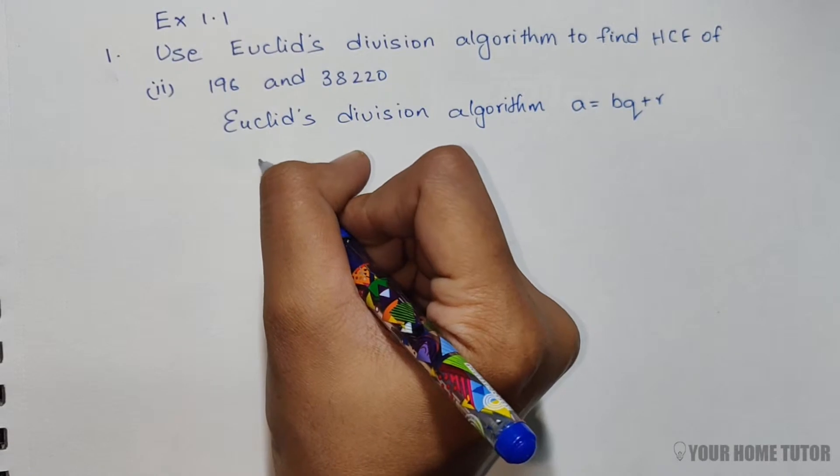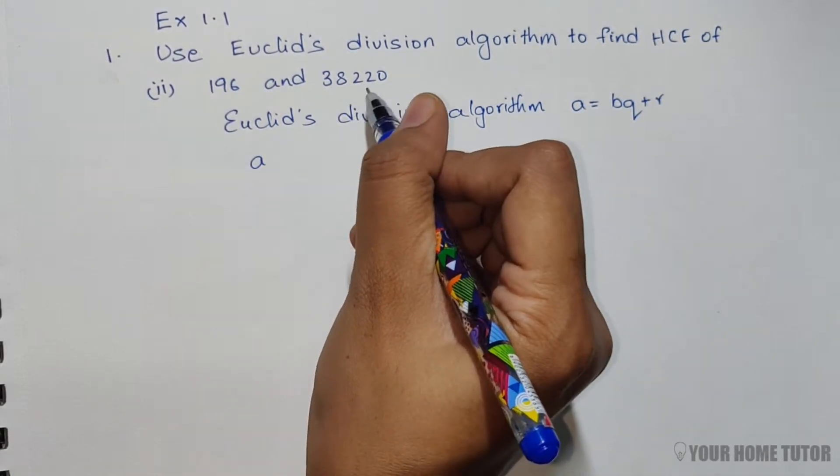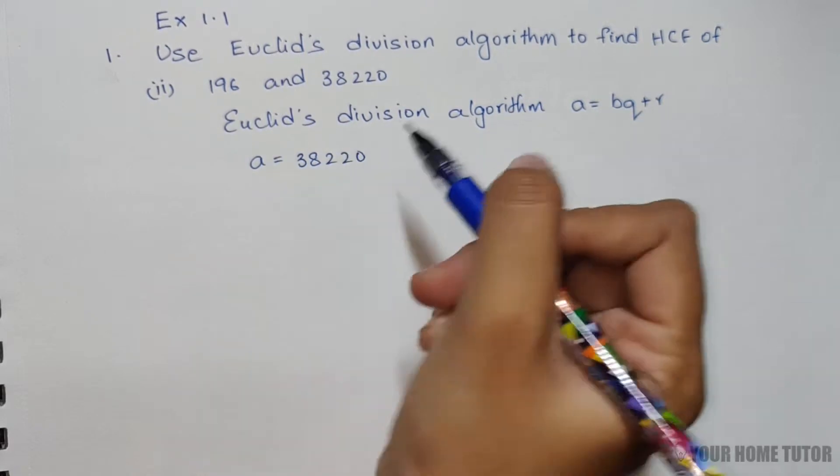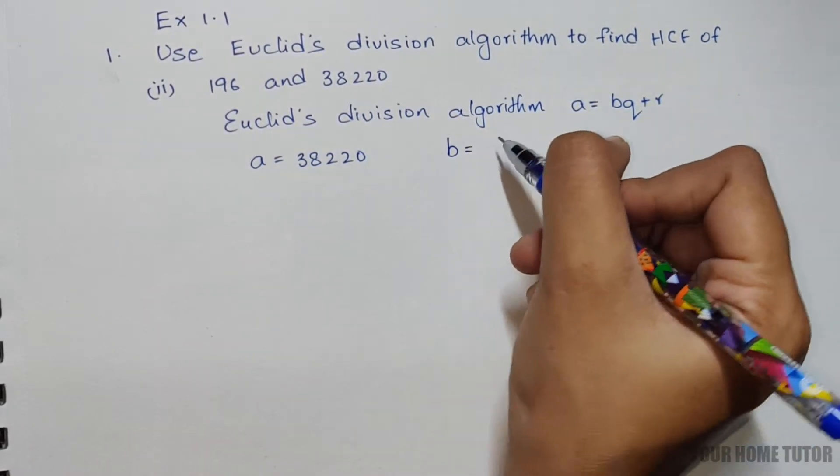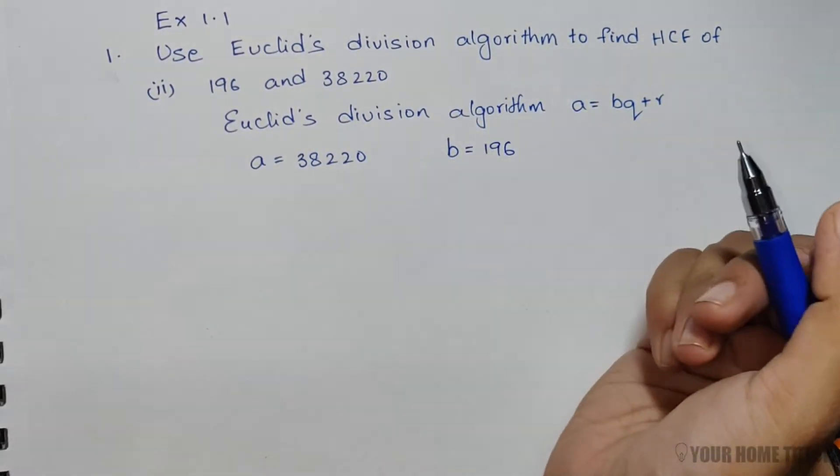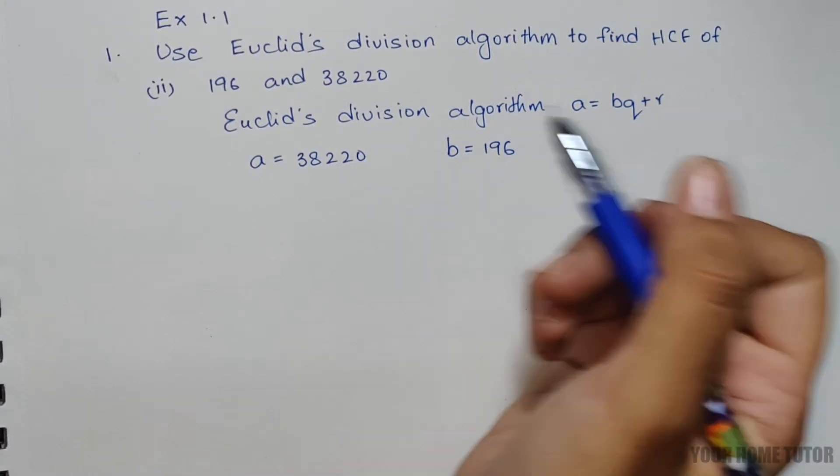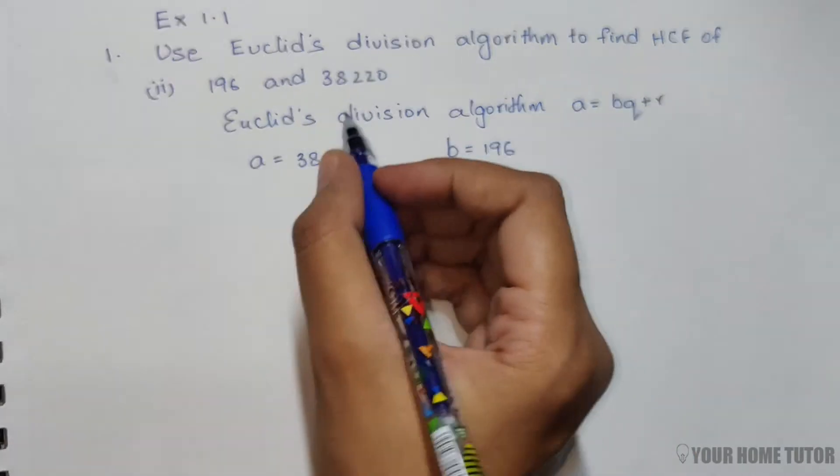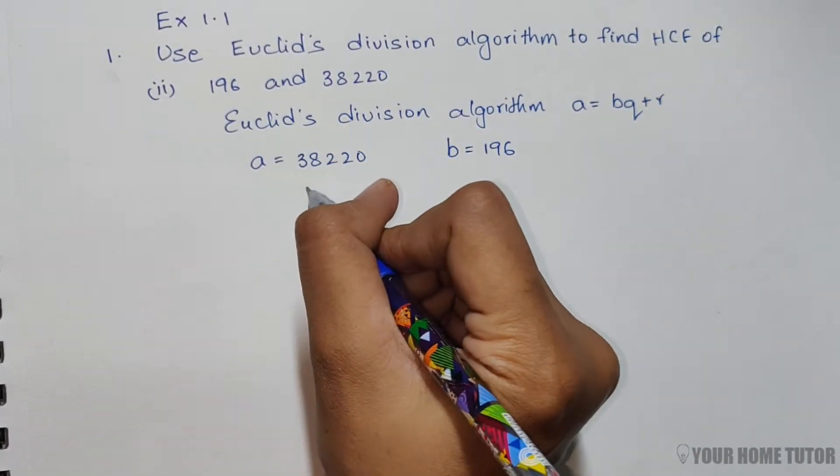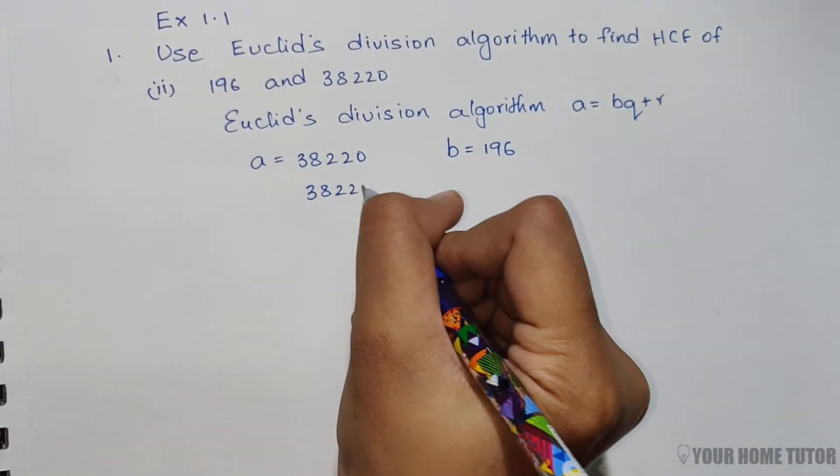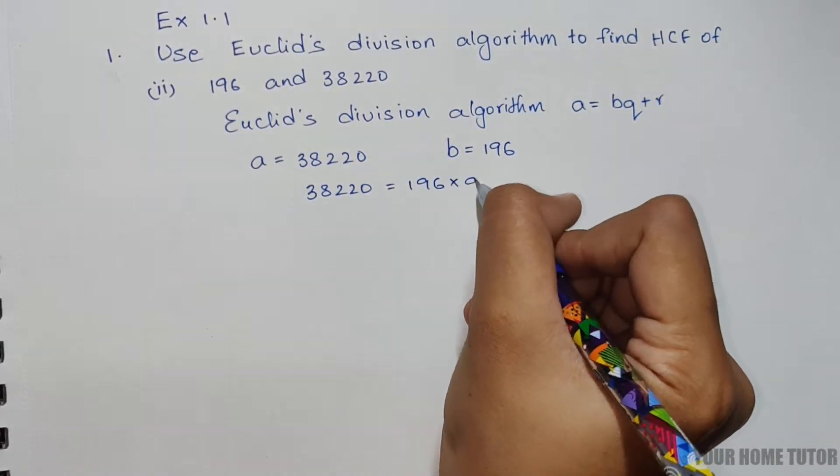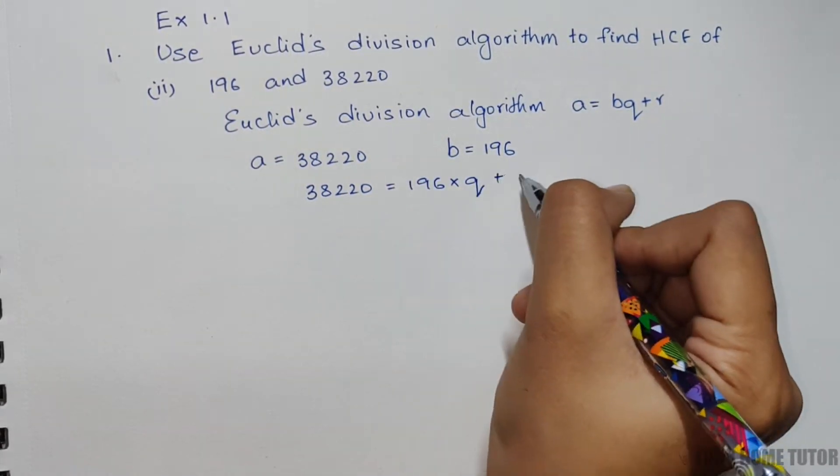Here, we will take the bigger number 38,220 as A and the smaller number 196 as B. Applying Euclid's division algorithm: 38,220 equals 196 times Q plus R.